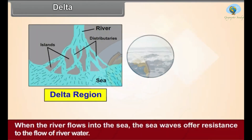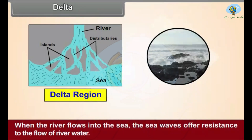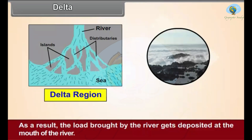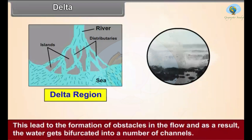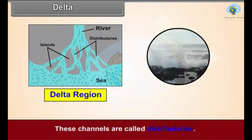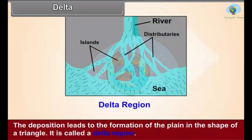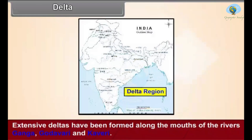Delta: When the river flows into the sea, the sea waves offer resistance to the flow of river water. As a result, the load brought by the river gets deposited at the mouth of the river, forming obstacles in the flow. The water gets bifurcated into a number of channels called distributaries. The deposition leads to the formation of a triangular plain called a delta. Extensive deltas have been formed along the mouths of the rivers Ganga, Godavari, and Kaveri.